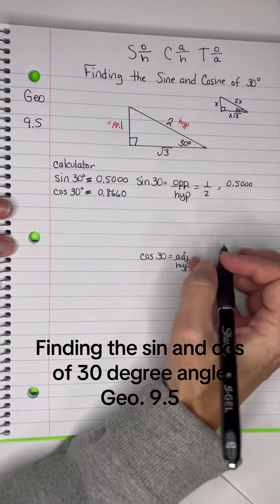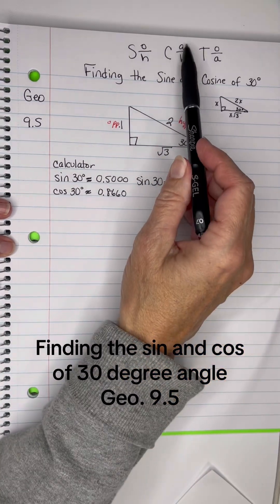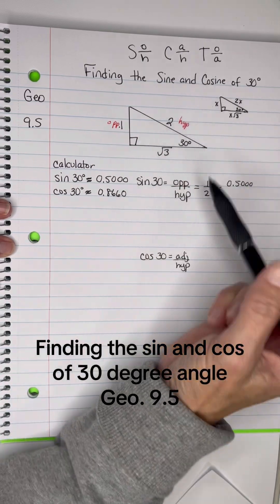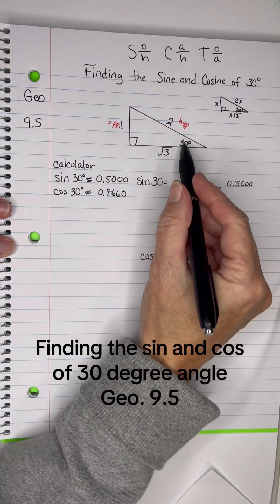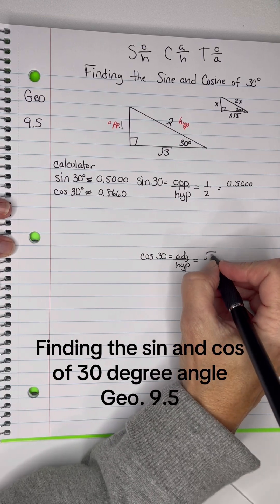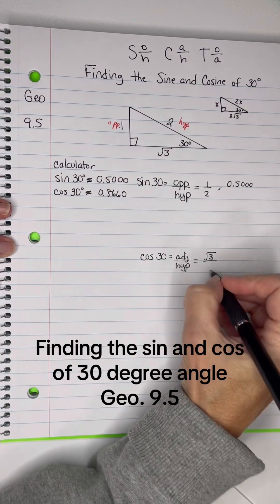And then for the cosine, the cosine is adjacent over hypotenuse. Some old hag come around here teaching old algebra, so adjacent over hypotenuse. The adjacent for the 30 is the square root of 3 over 2, okay?